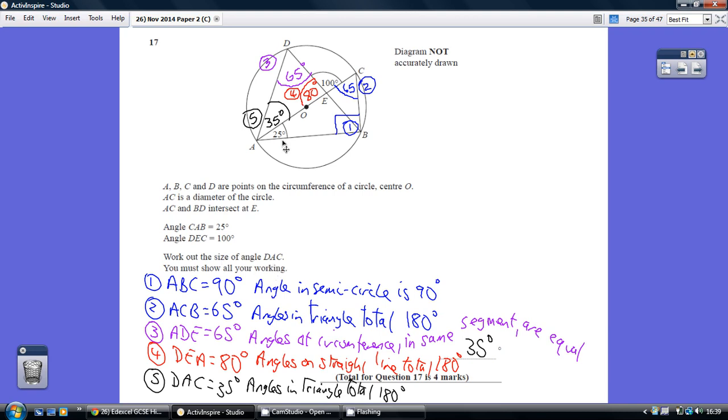So first thing, AC is a diameter, so this angle ABC is an angle in a semicircle, and one of our circle theory rules tells us that an angle in a semicircle is 90 degrees, so we know this is 90.